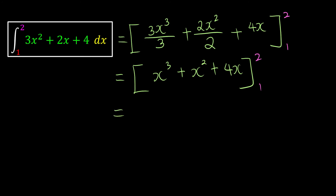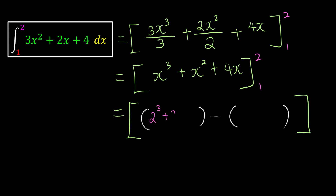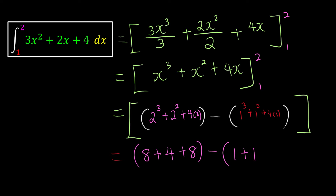Substituting the upper limit first and then the lower limit in separate brackets: for the upper limit, 2 cubed is 8, 2 squared is 4, and 4 times 2 is 8; for the lower limit, 1 cubed is 1, 1 squared is 1, and 4 times 1 is 4. Computing: 8 plus 4 plus 8 equals 20, minus 1 plus 1 plus 4 equals 6. The final answer is 20 minus 6, which is 14.